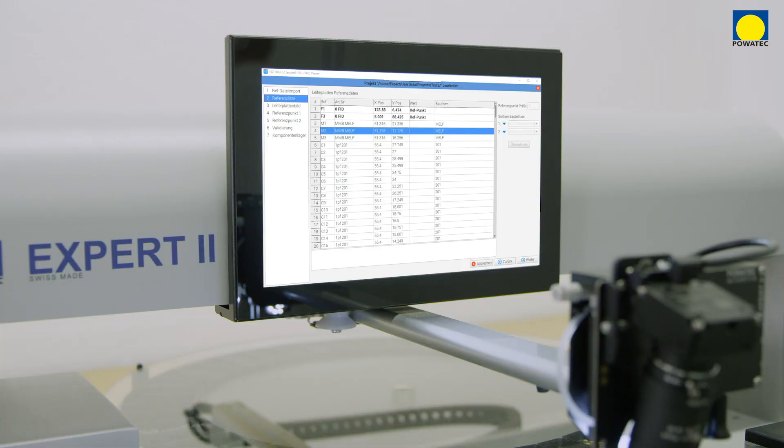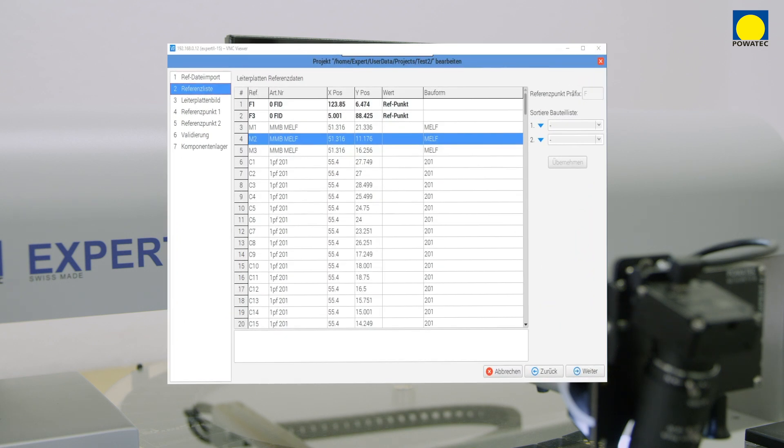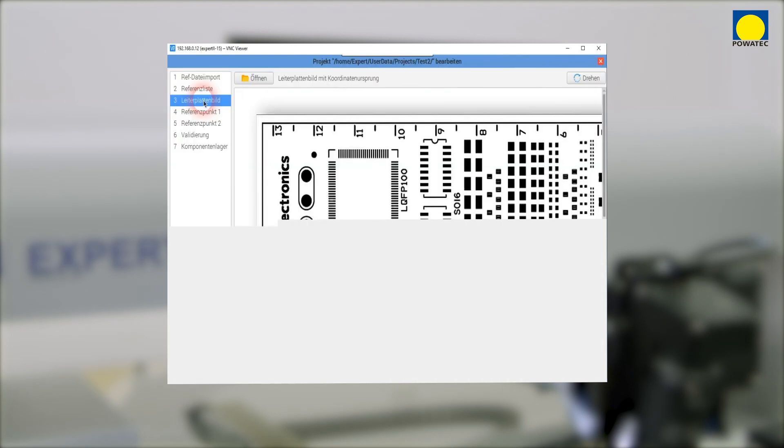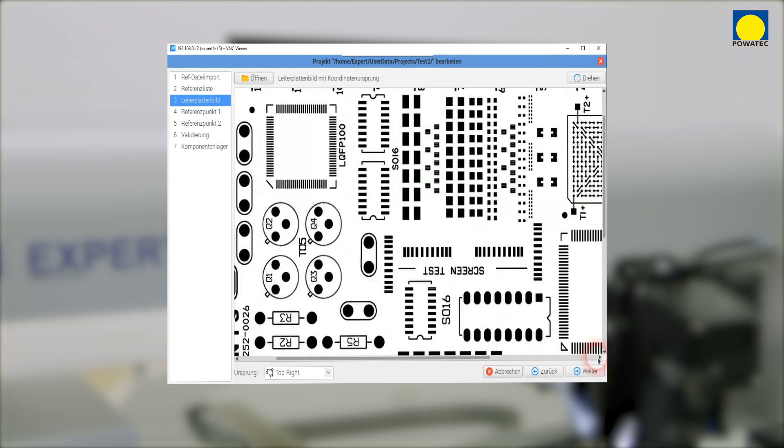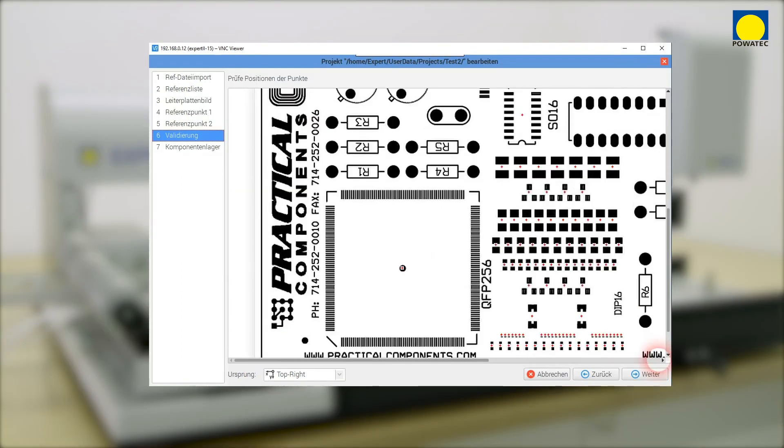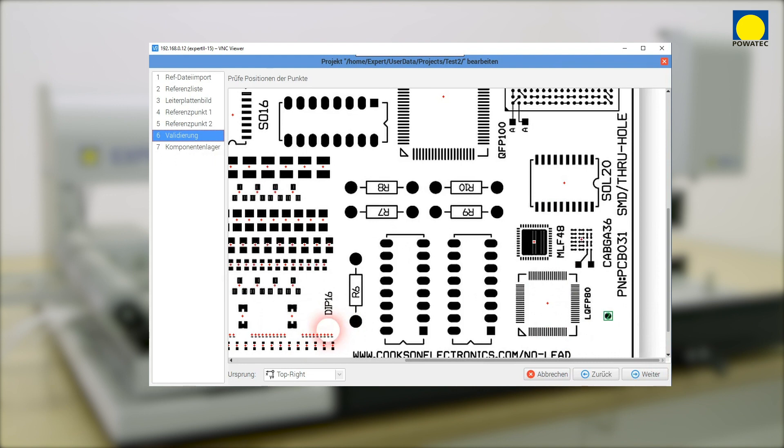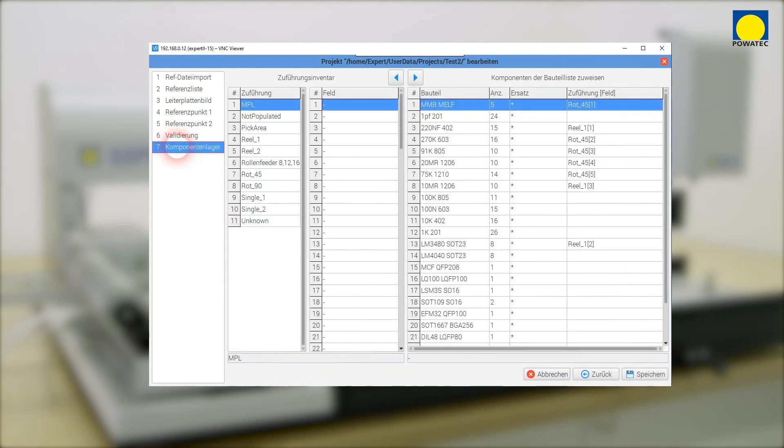For semi-automatic assembly, board files based on different CAD data can be conveniently imported. The PCB is displayed as an image on the monitor. All necessary setup information such as feeder position, turntable placement, as well as component definitions, are also provided by the software supplied.